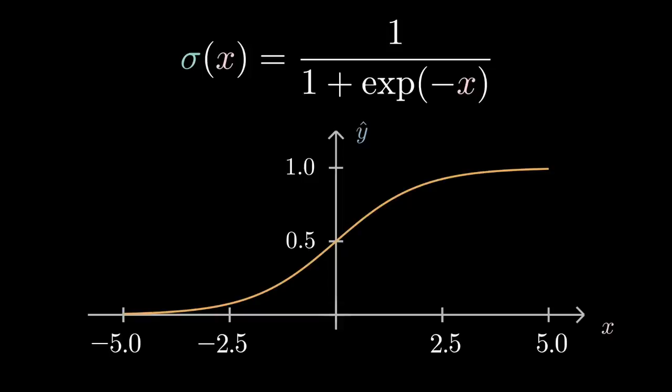The sigmoid activation function allows us to convert our binary output into a probability. So if the output is 0.5, there is a 50% chance of the predicted event happening. The reason why we can do this is because the sigmoid function always takes on a value between 0 and 1.